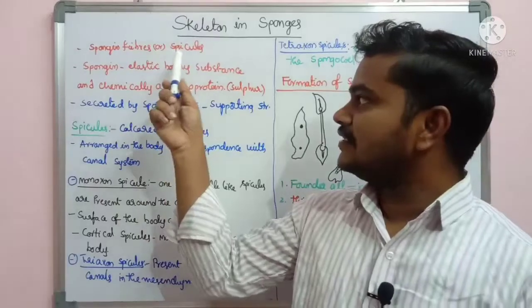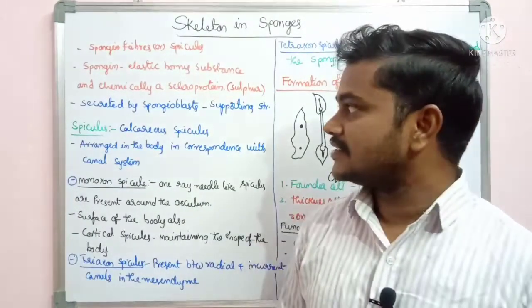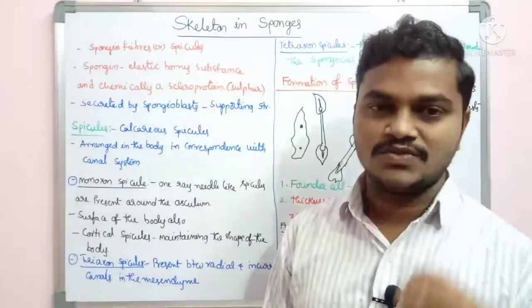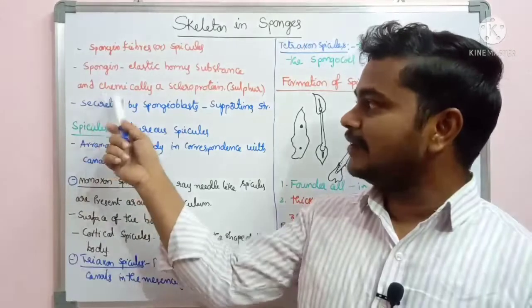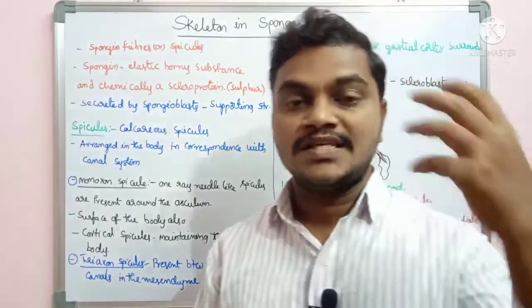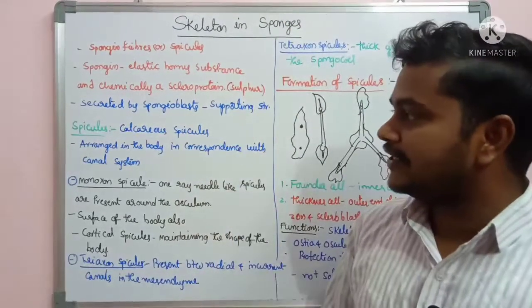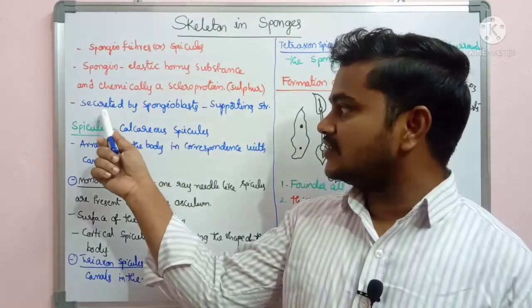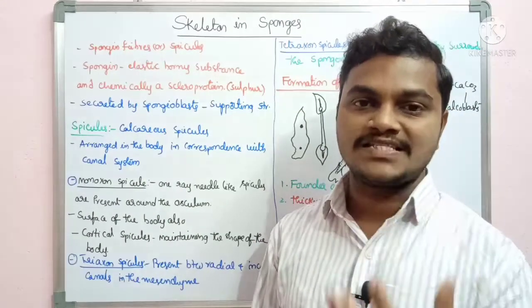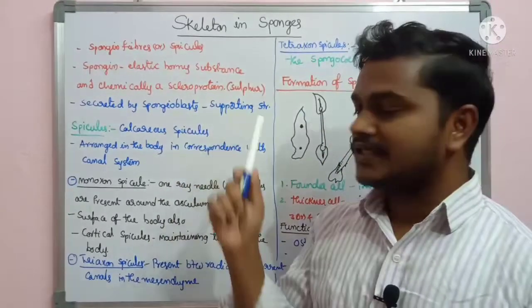Spongine Fibers are the major elements of the skeleton. Spongine is an elastic, horny substance — it is a scleroprotein which contains sulphur. This spongine is secreted by spongioblasts. It forms a supporting structure.